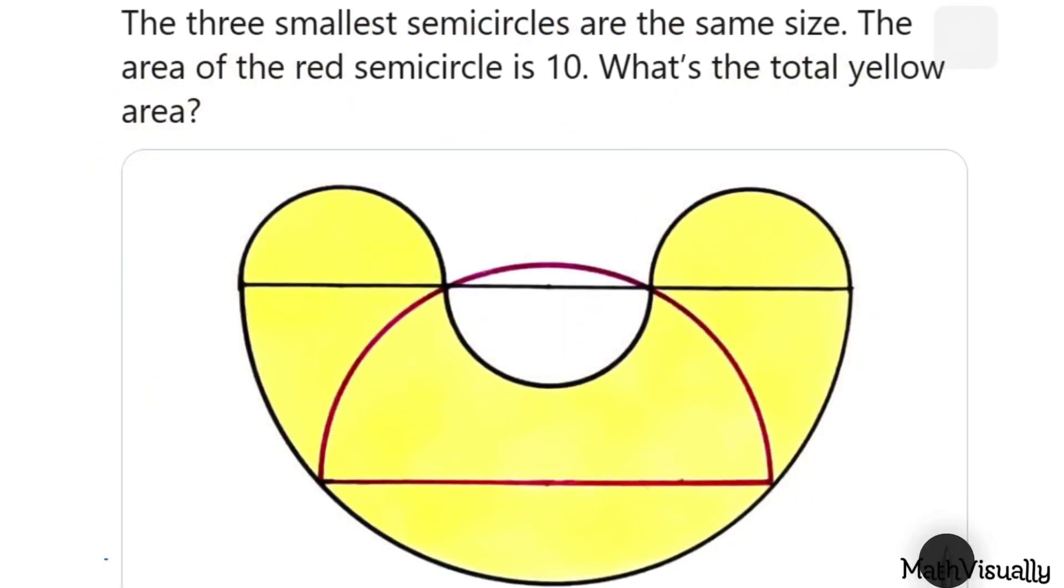Hello everyone, here is an interesting geometry puzzle for you. The area of this red semicircle is 10 square units, and these three smaller semicircles are exactly similar. We have to find the area of the yellow portion in the figure. You can just pause the video, try solving it, and then resume the video once you are done.